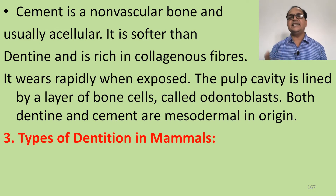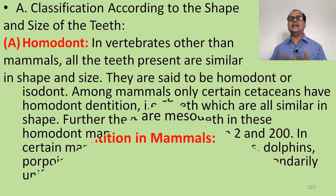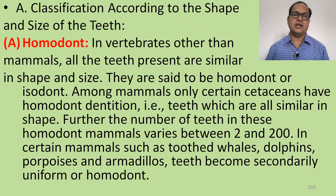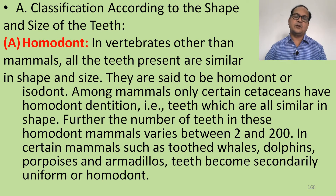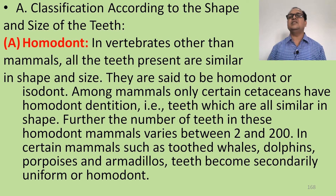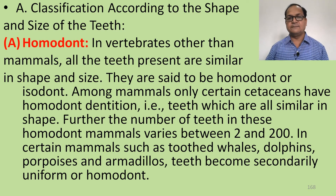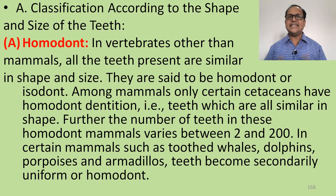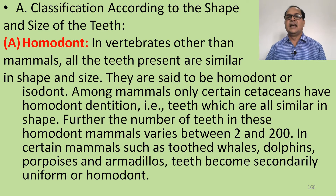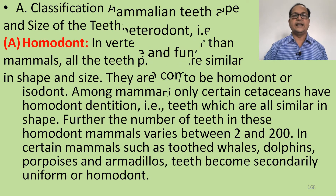The types of dentition in mammals: classified according to shape and size, two types are found — homodont dentition and heterodont dentition. In homodont dentition, all teeth are similar in shape and size, as seen in certain cetaceans such as whales, dolphins, porpoises, and armadillos.